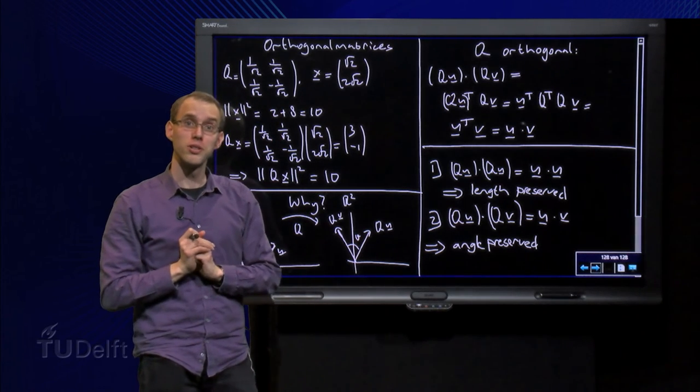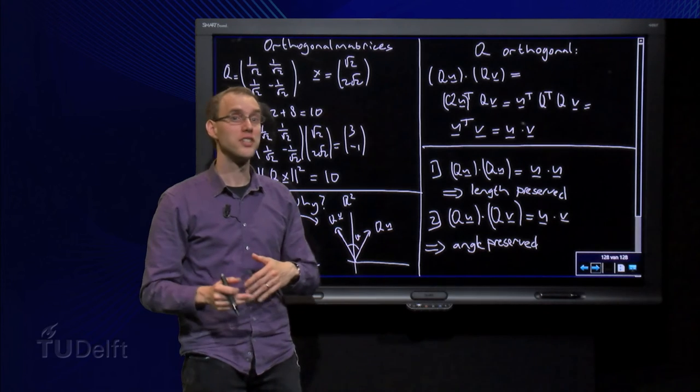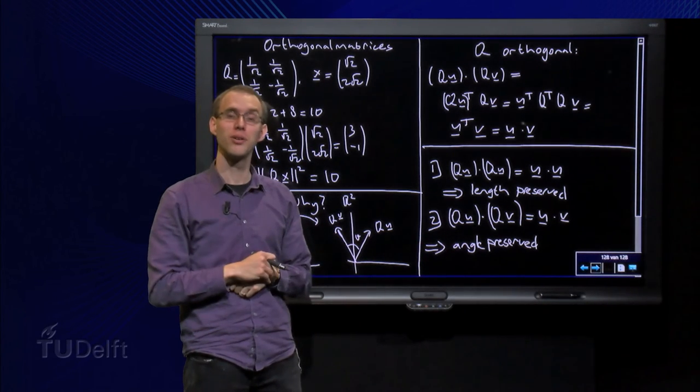So that is why those transformations given by orthogonal matrices are really nice - since they preserve both angles and lengths of vectors.